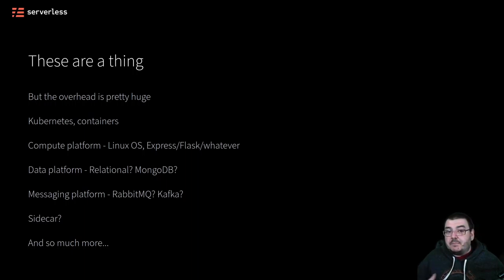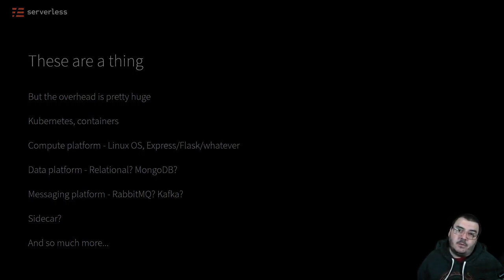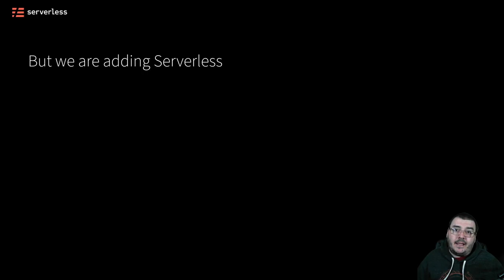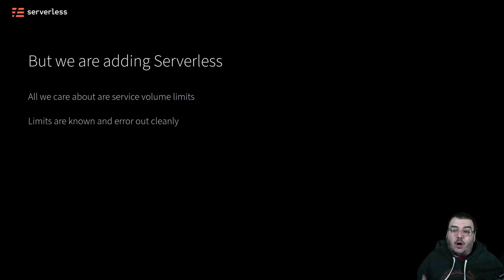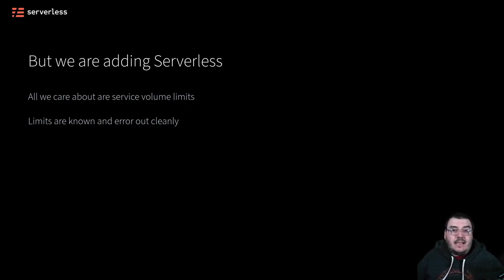So instead of us having to spin up our own serverless environment, why don't we just use what is provided by the cloud vendor? We are adding serverless to the equation, and all we care about when we're working with serverless is what our volume limits look like in the cloud. There are certain limits to Lambda, concurrent Lambda functions, certain limits to DynamoDB, to API Gateway — and we know about these ahead of time. We don't need to plan for CPU and scaling.